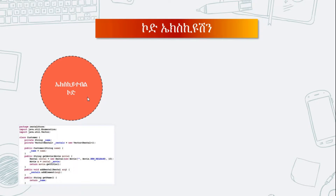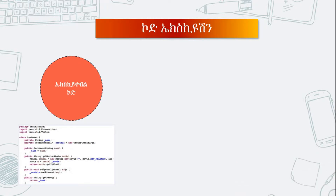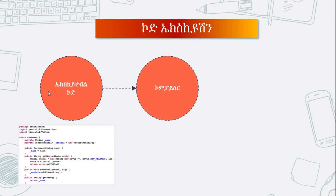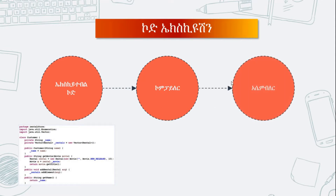How to use the code and executable code? How to use the executable code and the architecture. With the executable code, you will use the assembly language — your computer's low level language.